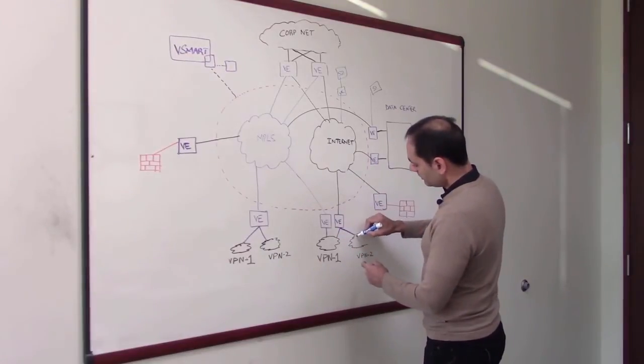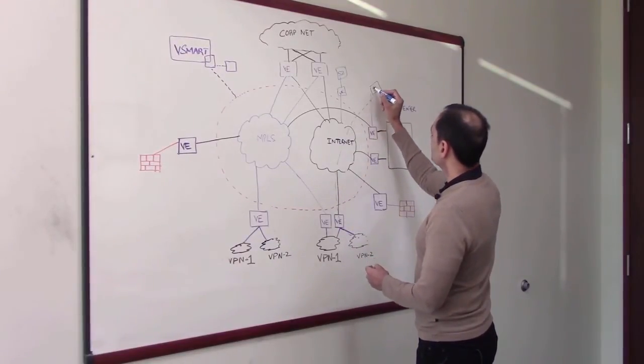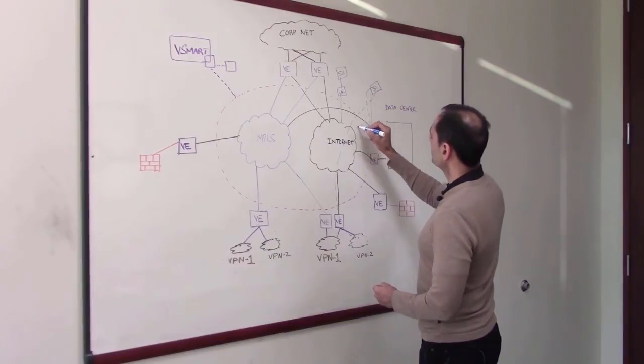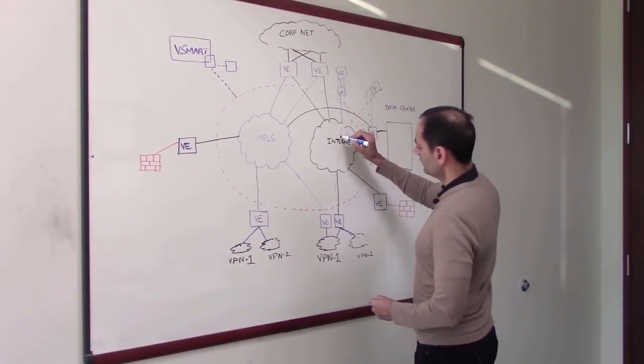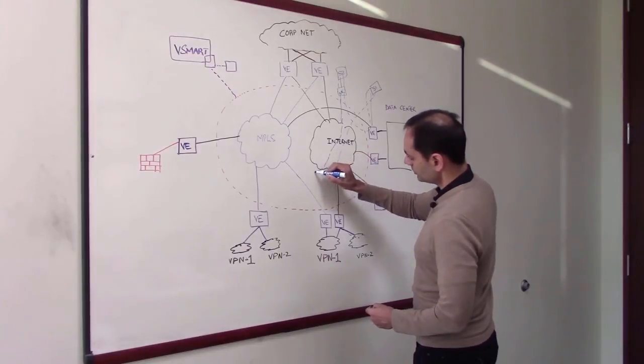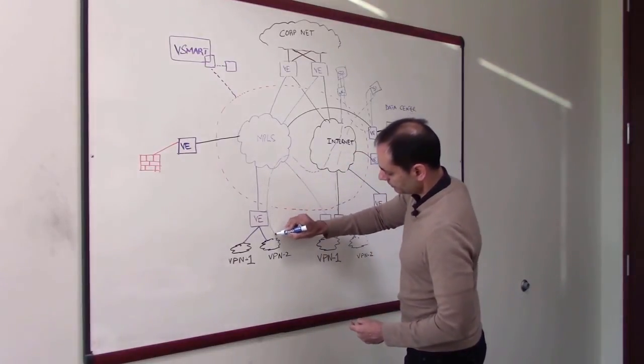So your traffic from here will go to service one, come back here, go through service two, come back here and then maybe it goes to VPN2.